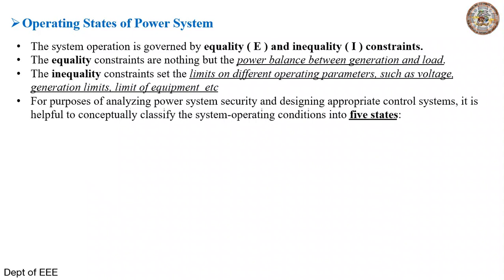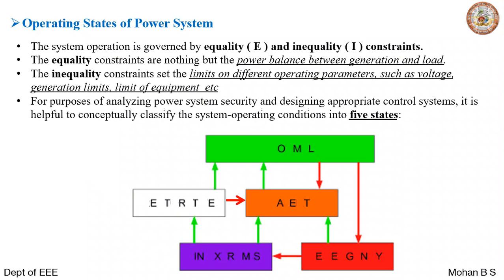For the purpose of analyzing power system security and design control, it is helpful to conceptualize and classify the system operating conditions into five different states. Let's see these five different states one by one — shown in green, orange, red, purple, and white colors. The arrows represent the flow, showing which state we can move from and to.